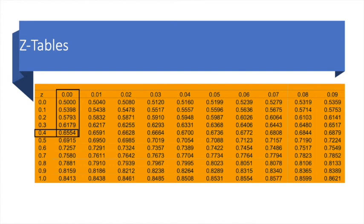Now if instead the Z score were 0.41, then we would have picked the next column under 0.01.